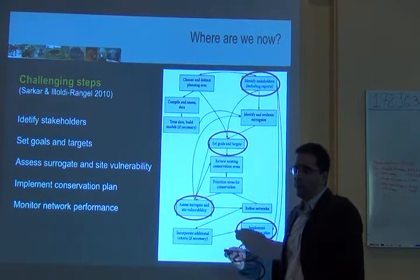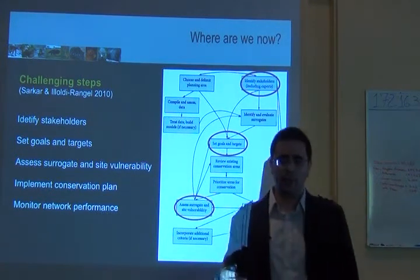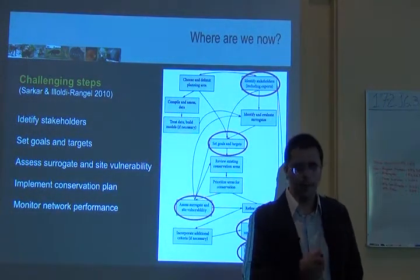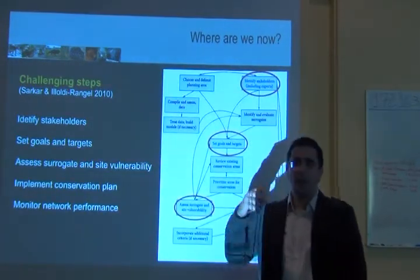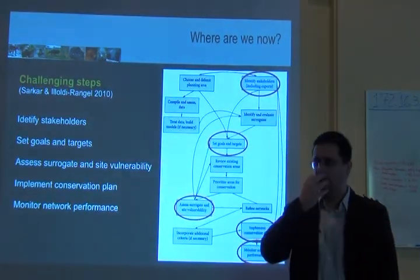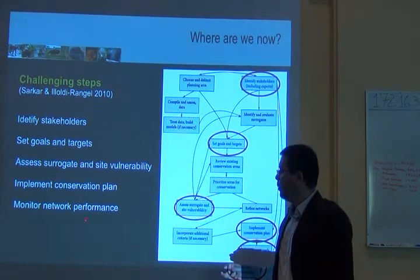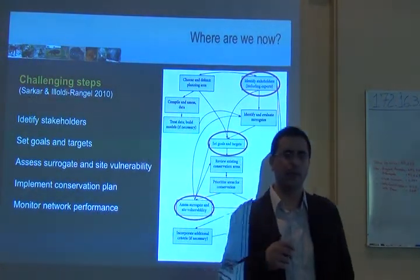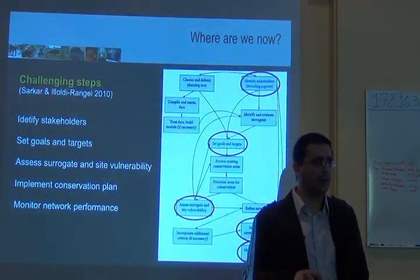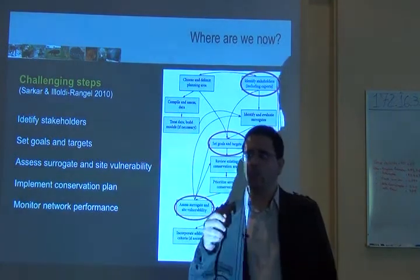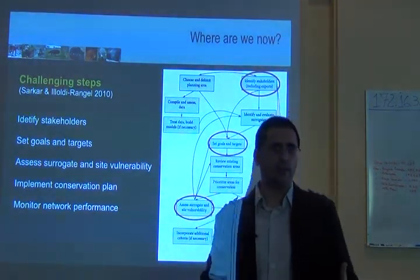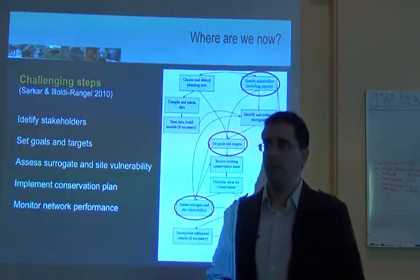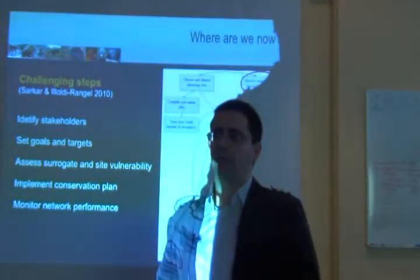Implementing a conservation plan is obviously challenging — it goes far beyond the planning itself and requires much higher-level engagement and political will. Monitoring network performance is also very difficult: you need a national or well-coordinated state plan to track what is happening inside each protected area to see if targets are being achieved.